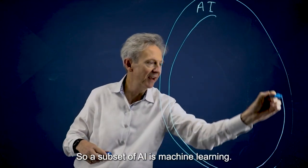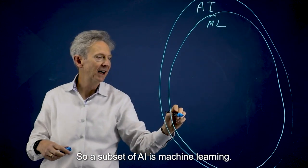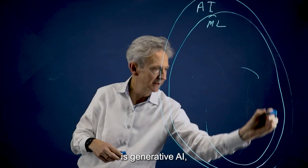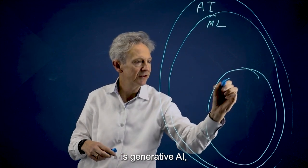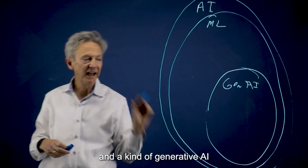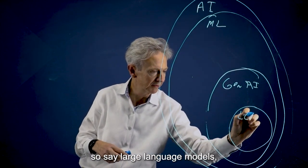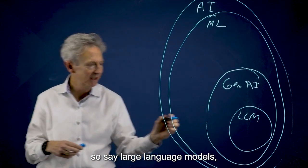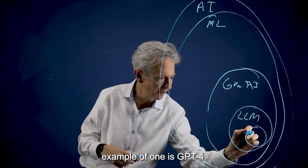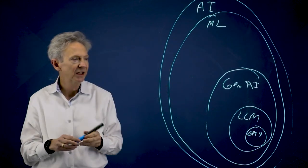So a subset of AI is machine learning. And then a kind of machine learning is generative AI. And a kind of generative AI is language-based, so large language models. And then a kind of large language model, or an example of one, is GPT-4.